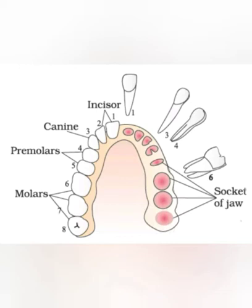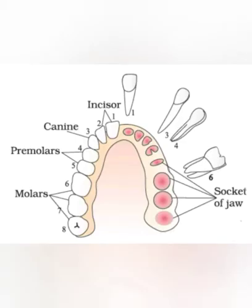We use the incisors, also called cutting teeth, for cutting food. They are total 8 in number and are located on the upper jaw and on the lower jaw.